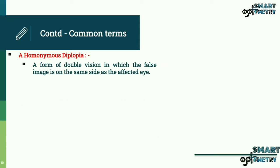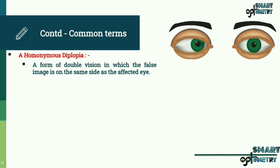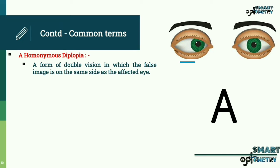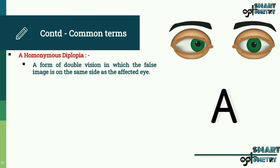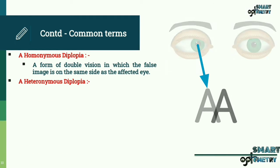Homonymous diplopia: a form of double vision in which the false image is on the same side as the affected eye. Example: the right eye has convergence squint, i.e., the eye moves towards the nose; the left eye is normal. The diplopic image is seen to the right of the image seen by the unaffected eye.